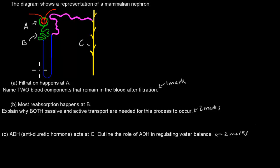Welcome back. For the first one, it's relatively straightforward. Filtration happens at A, which happens to be the glomerulus and the Bowman's capsule. A is the Bowman's capsule. You don't have to label that, I'm just telling you. So filtration happens here, and name two blood components that remain in the blood after filtration. Remember, that was because they were too big.